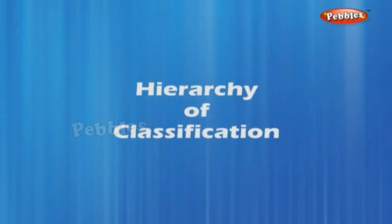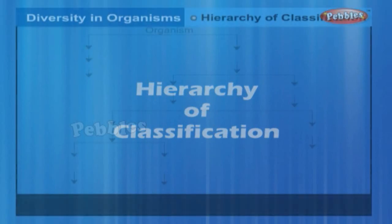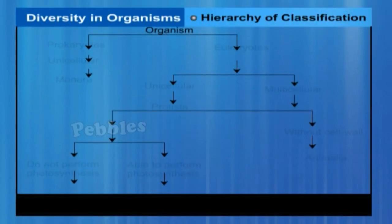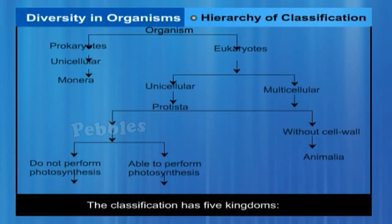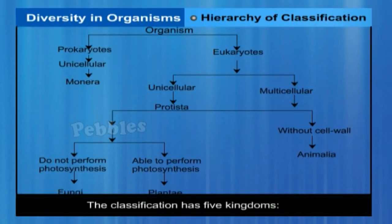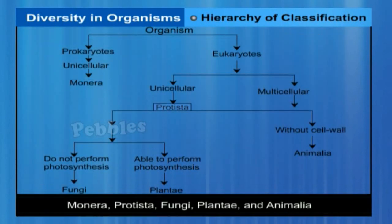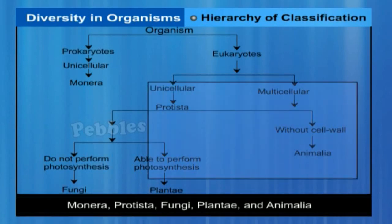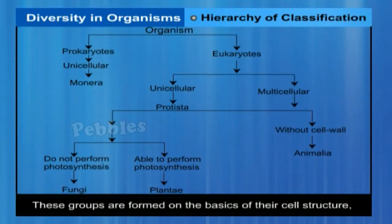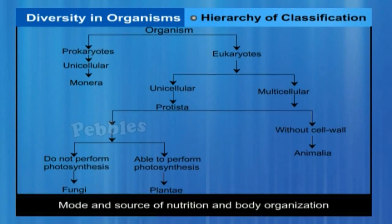The classification Whittaker proposed has five kingdoms: Monera, Protista, Fungi, Plantae, and Animalia, and is widely used. These groups are formed on the basis of their cell structure, mode and source of nutrition, and body organisation.